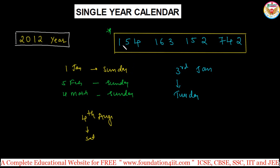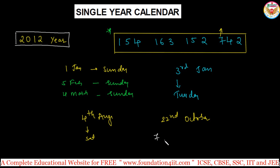The concept is to find the particular year you need instead of checking previous or future year calendars. For example: what day is the 22nd October? From the code, the 7th October is a Sunday. So all multiples of 7 — the 7th, 14th, and 21st — are Sundays. Therefore, the 22nd October is obviously a Monday.